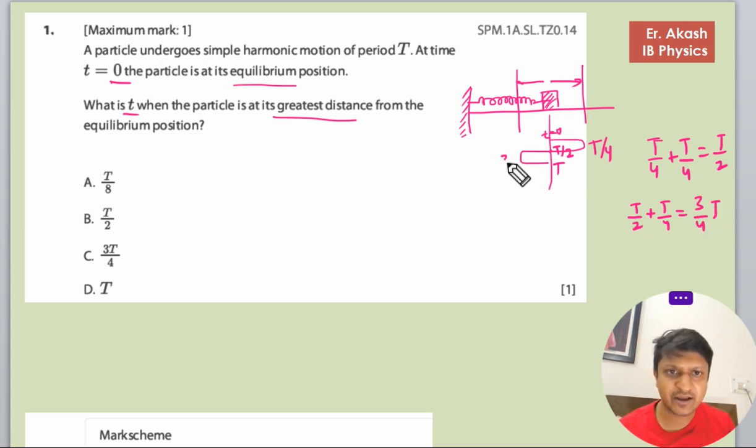You can do the calculation in your free time. Then we will add 3T by 4 plus T by 4, then it will equal to T. Now it asks what is the t when the particle is at its greatest distance from the equilibrium position.